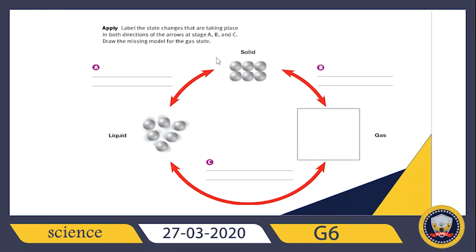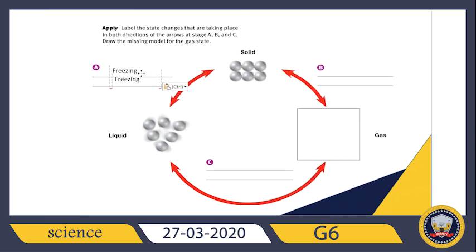For stage A, we have two directions. The change of state going from liquid to solid is called freezing. And the opposite direction — from solid to liquid — is called melting.